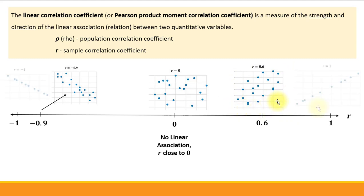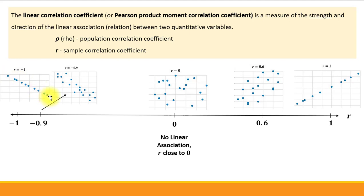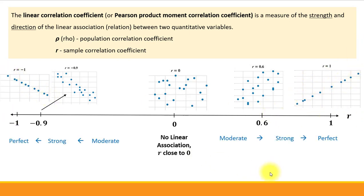Linear associations with correlation coefficients exactly one or negative one are called exact linear associations, where the points on the scatter plot lie exactly on a line. That illustrates how the correlation coefficient measures the strength of the linear association. It also measures the direction of a linear association — that's where its sign plays the role.